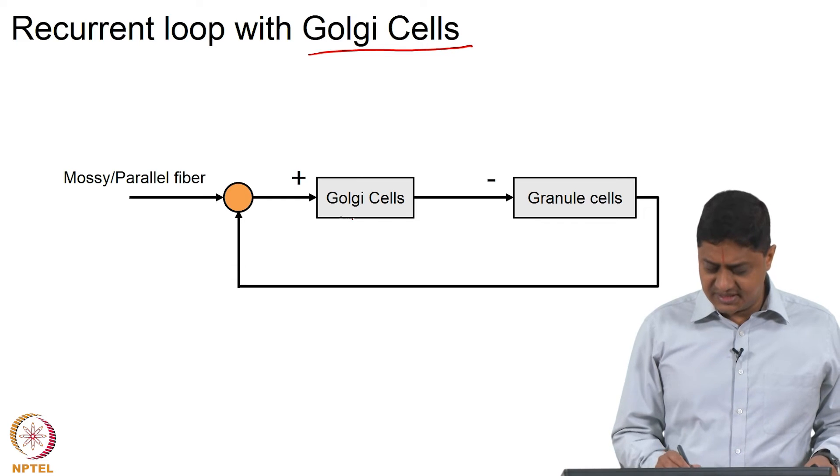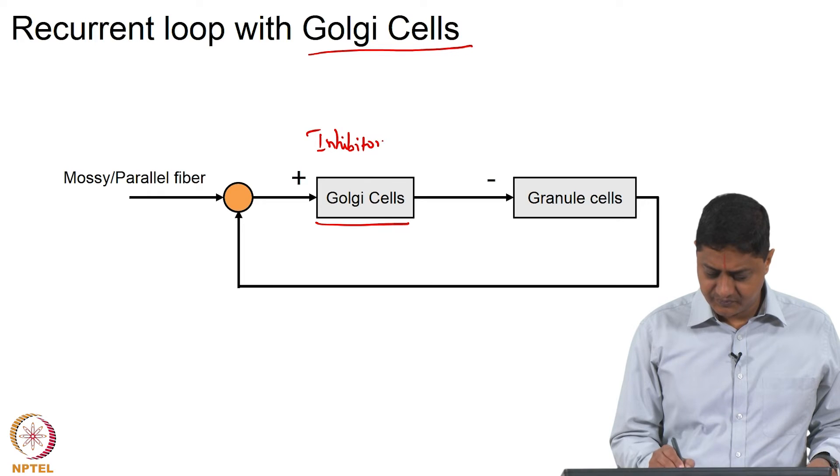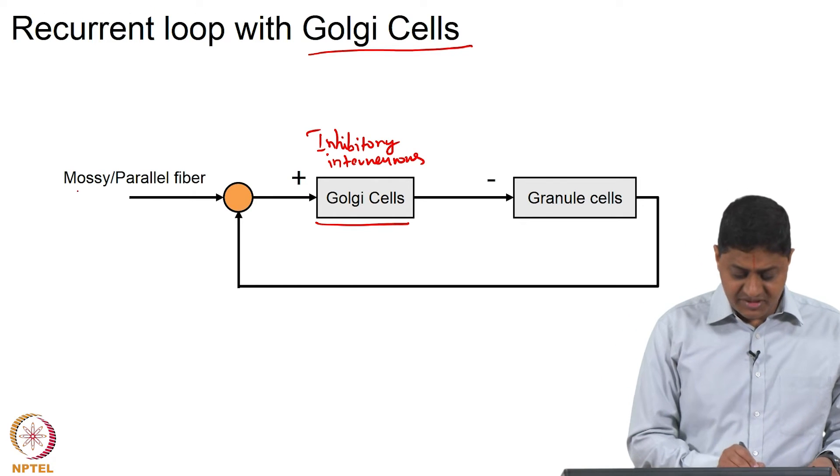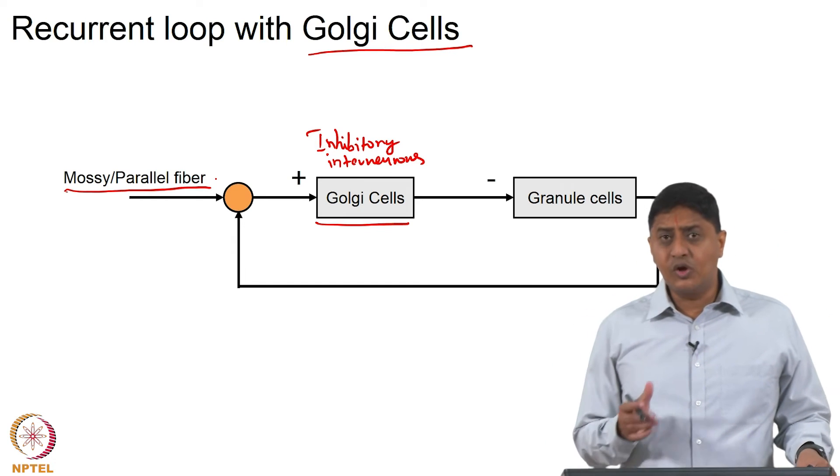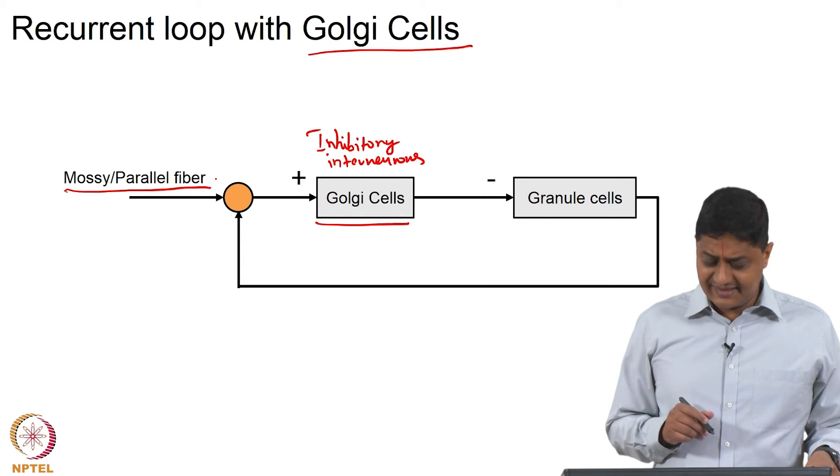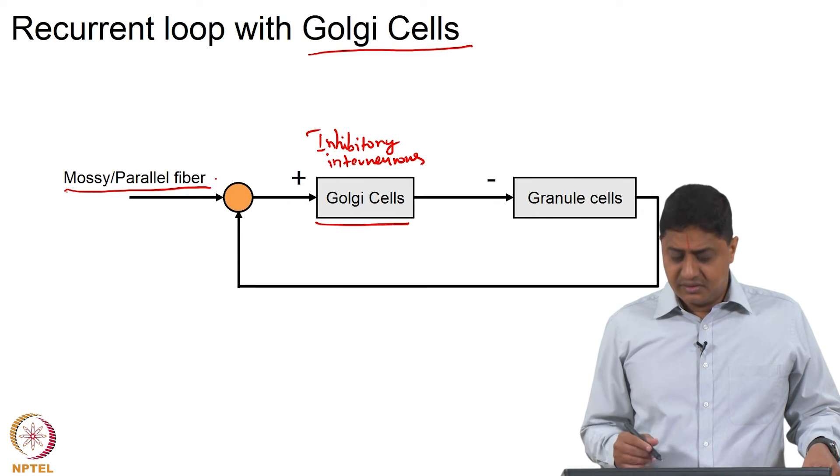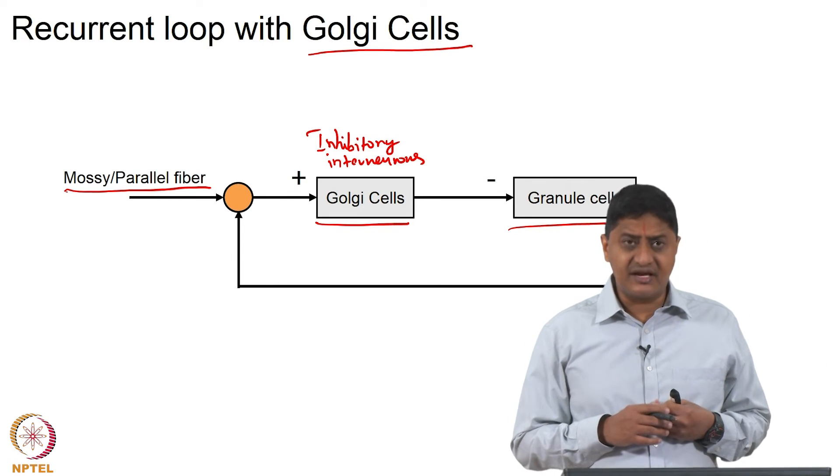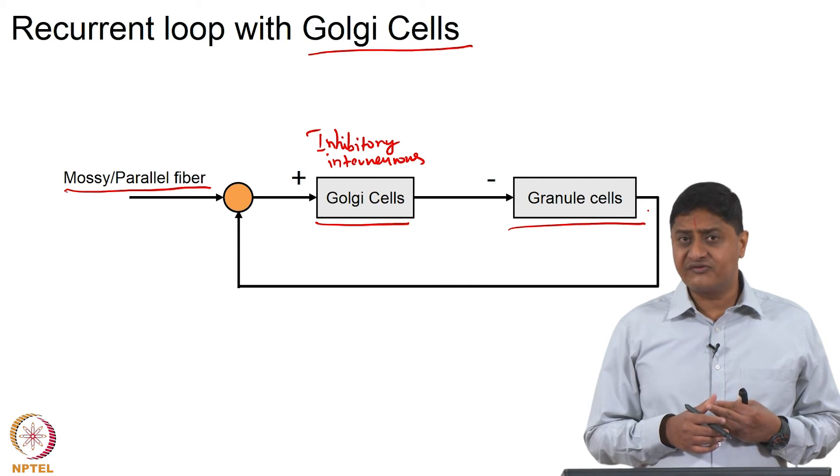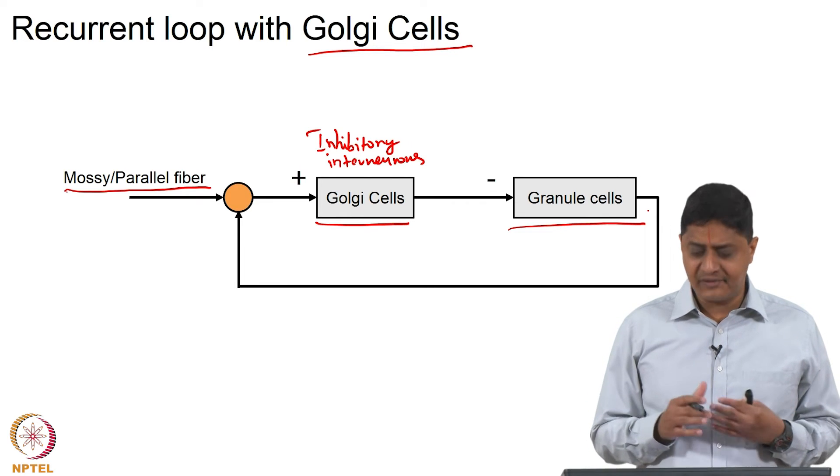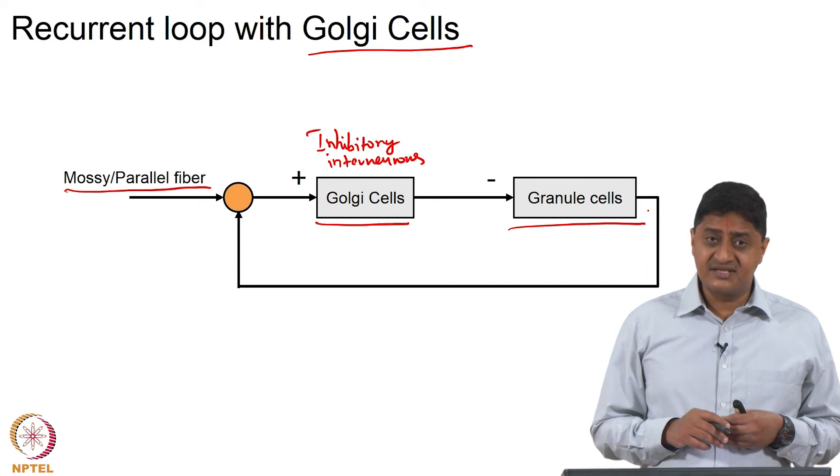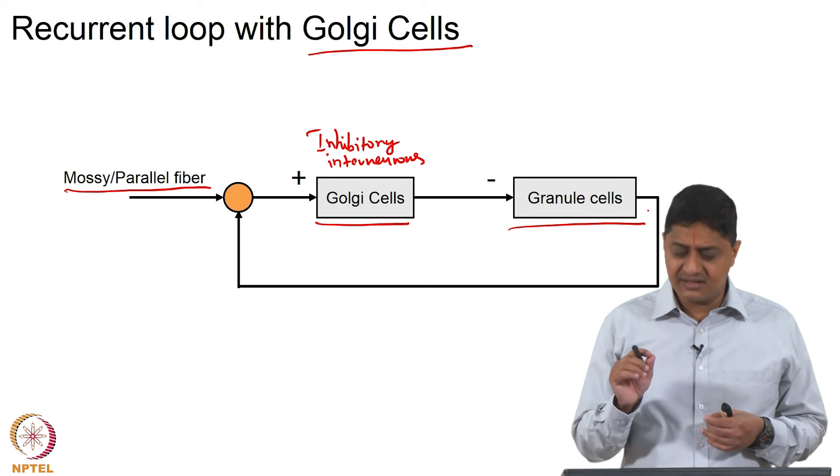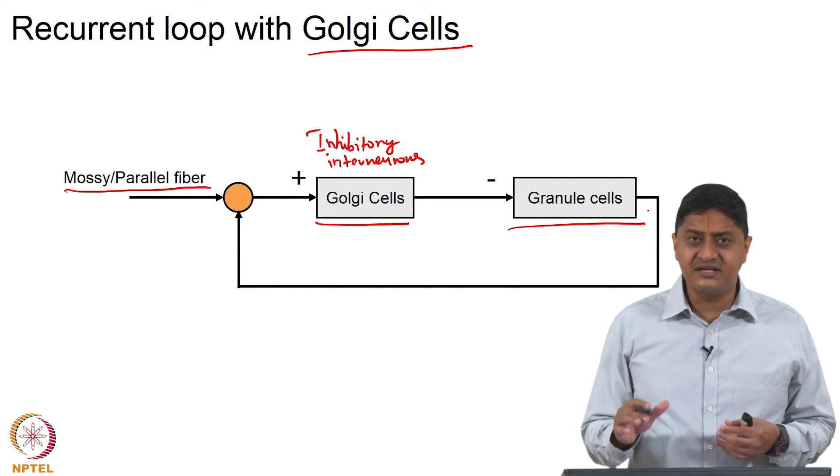It turns out that the Golgi cells are inhibitory interneurons that are excited by the mossy parallel system. In the glomerulus they are excited by the mossy fiber, and parallel fibers also excite the Golgi cells. And in turn these Golgi cells inhibit the granule cells. What would be the purpose of such an arrangement? The number of granule cells is about 100 billion. If all of these cells are simultaneously active it is not clear what is the meaning of that. It is required for us to have excitatory inputs from only specific granule cells that need to be active.